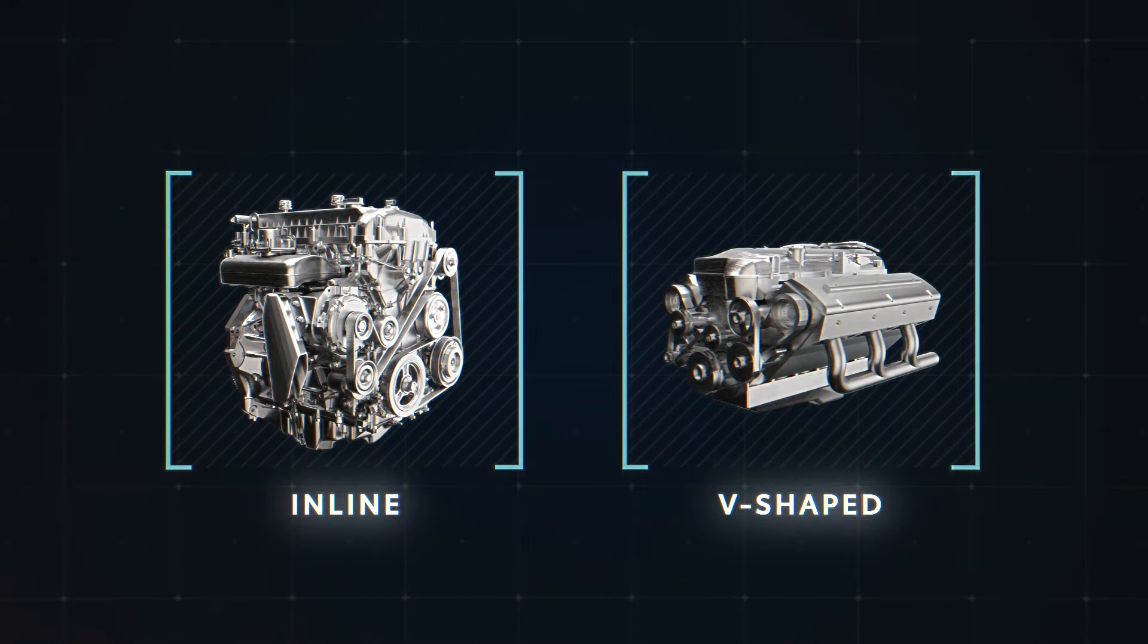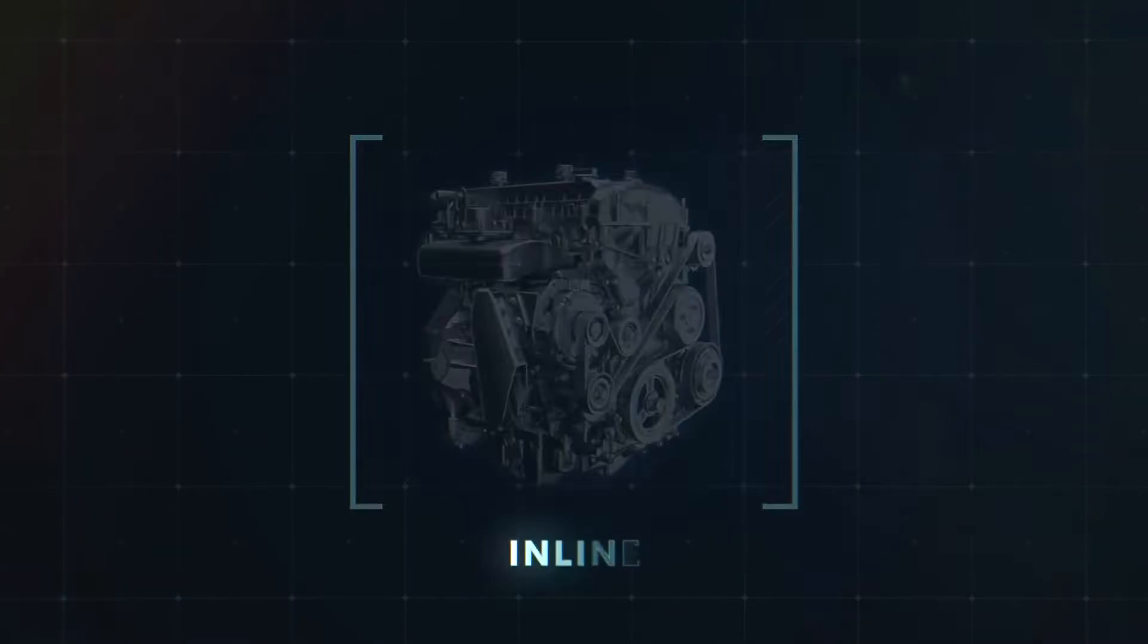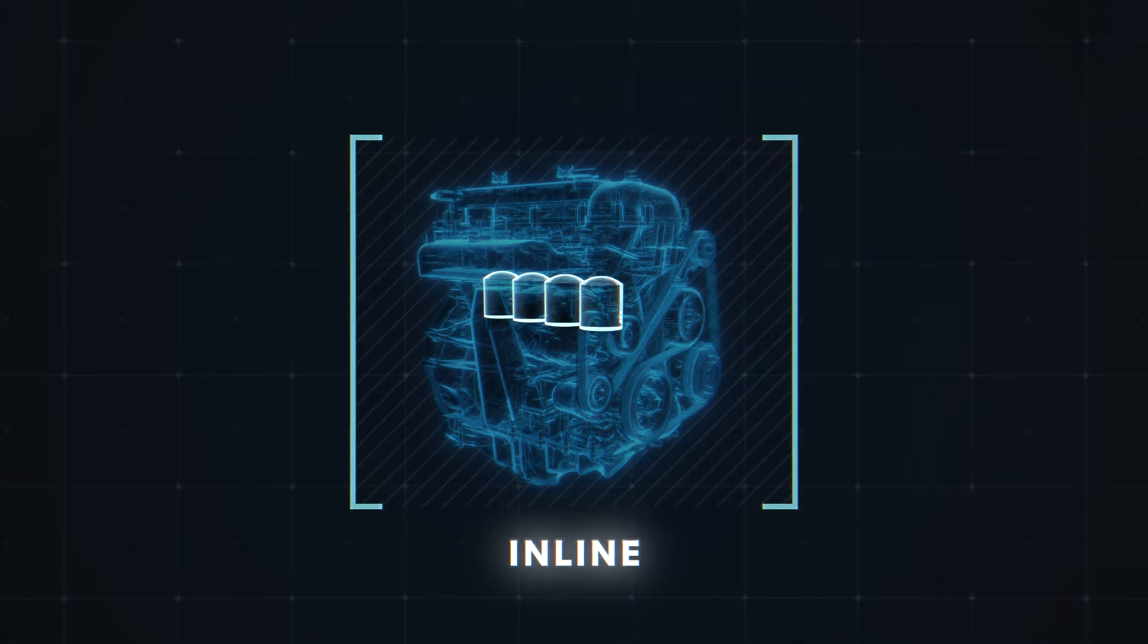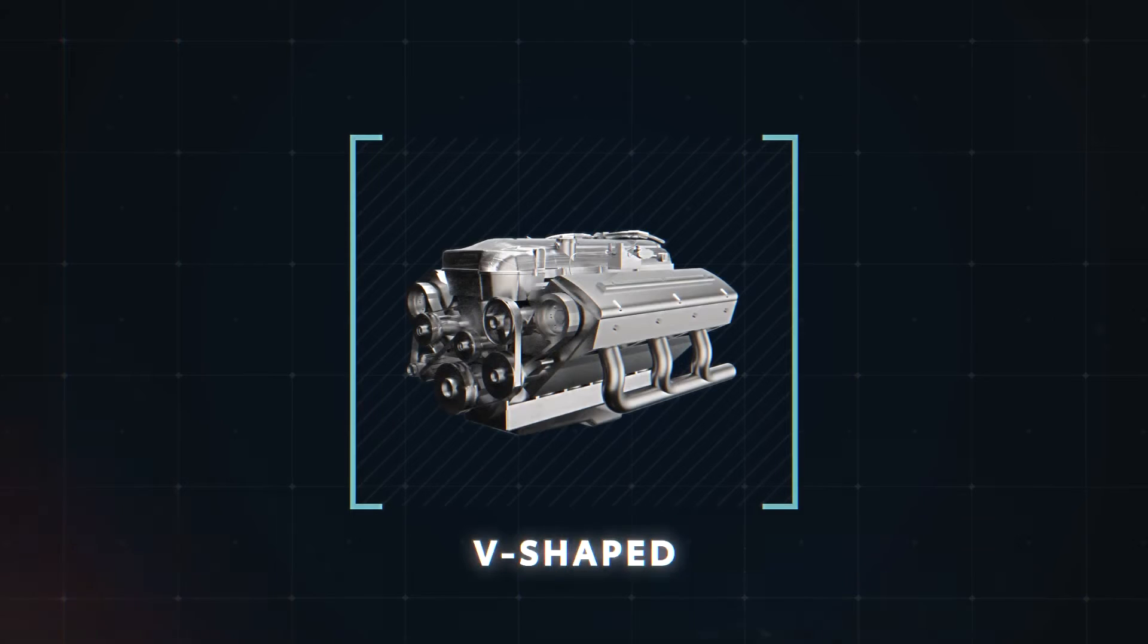These terms simply refer to the number of cylinders in the engine and their layout. Nearly all four-cylinder engines have their cylinders arranged in a row, called inline or straight. But it's also pretty typical to see engines group their cylinders into two banks connected at an angle, a V.